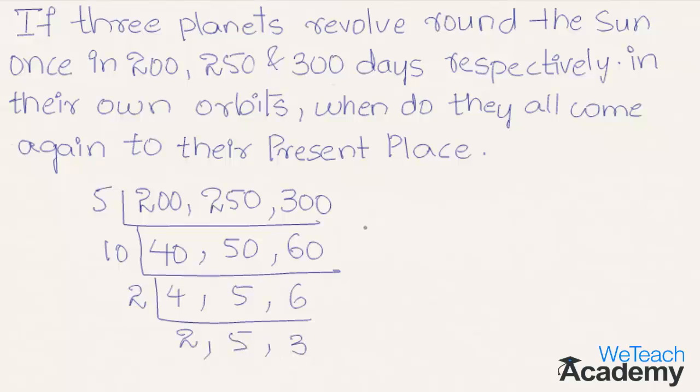So here the LCM is the product of their factors: 5 into 10 into 2 into 2 into 5 into 3. The product is 3000. So we can say that three planets come again to their present place in 3000 days.